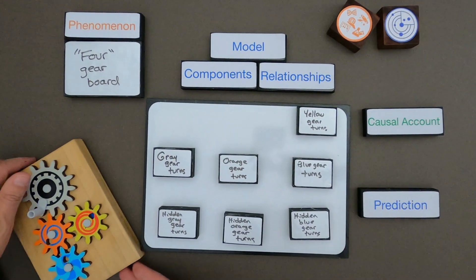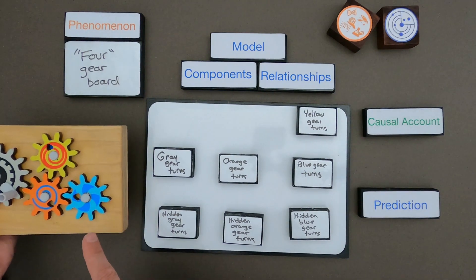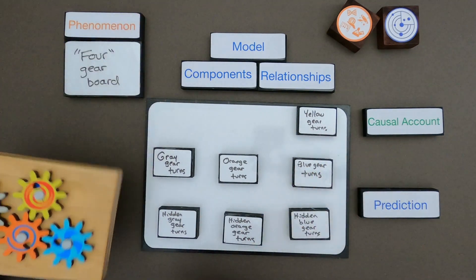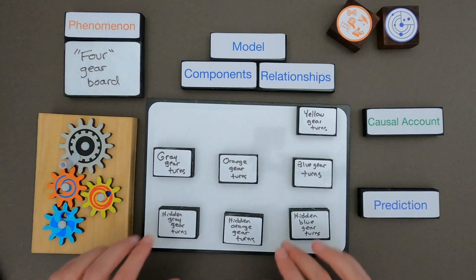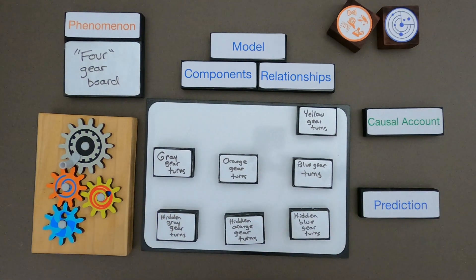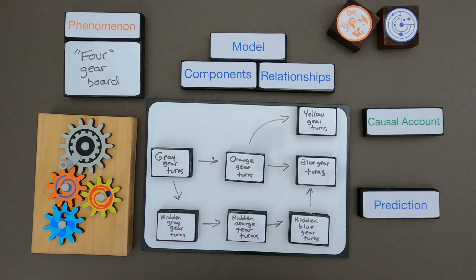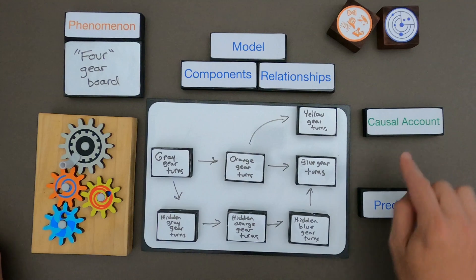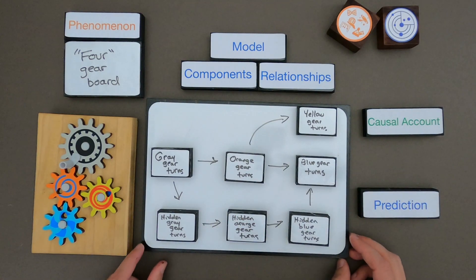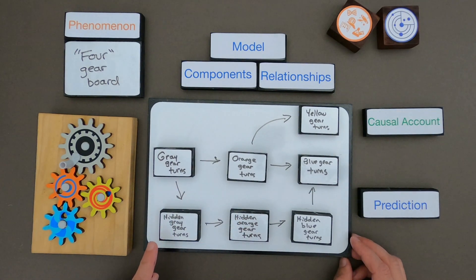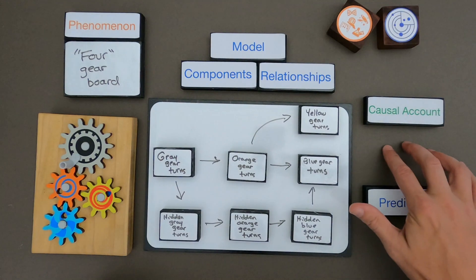Now I've got those all organized on the whiteboard — I try to organize it so it looks kind of the same way as the phenomena. We've got the gray gear turning, the orange gear turning, the blue gear turning, and the yellow gear turning. Once I have that organized, the next thing is to define all the relationships between those events. Since this is a causal account, all these arrows move in one direction, and that means there is a cause. The turning of the gray gear causes the orange gear to turn but also causes the hidden gray gear to turn. Now I've got the two main parts of a model; the next thing is to write out a causal account.